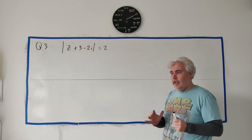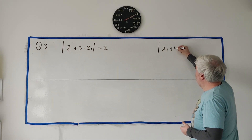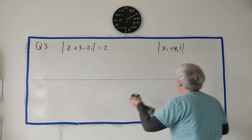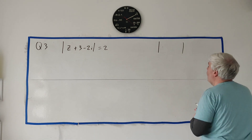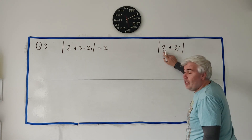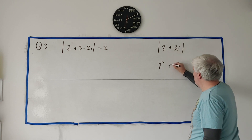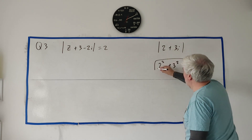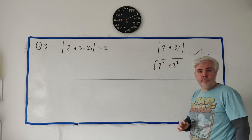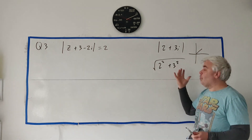First of all, I want to define the modulus. The modulus — let's use 2 plus 3i as an example. All the modulus does is it squares the real part, squares the number in front of the i, adds them, and takes the square root. So it's √(2² + 3²). That's what a modulus does. You can also think of that as the distance to zero, the origin. You're expected to just remember this — you don't have to prove this in an exam.